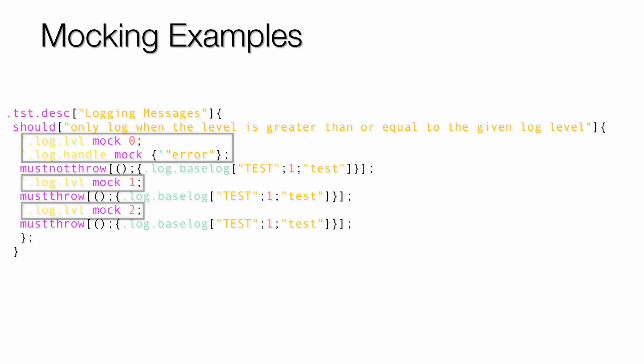Anything placed into the runtime system through the use of the mock function will be returned to its normal state after the test is finished. This means we can reach into the guts of a program and tweak something without having to worry about what that will do in another part of our tests. In this example, I'm attempting to make sure that the guard determining whether the logging function actually logs is working right — going through a couple of iterations, changing the log level, and seeing if the log message gets through to the output handle.